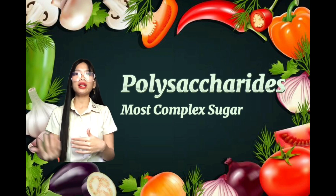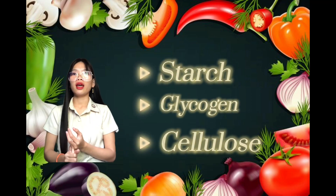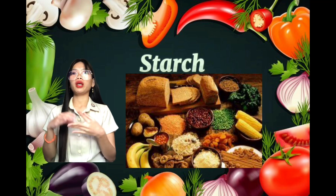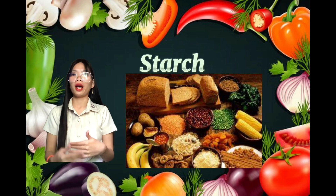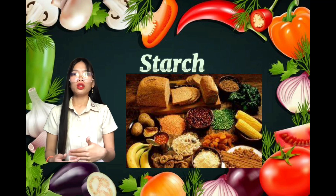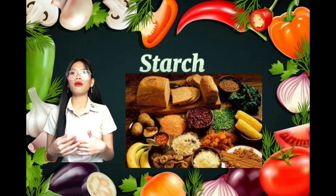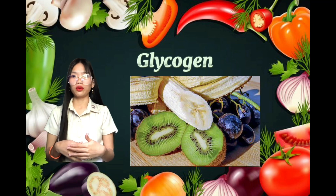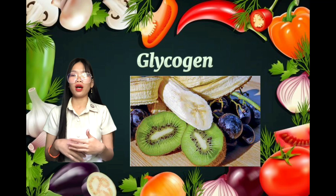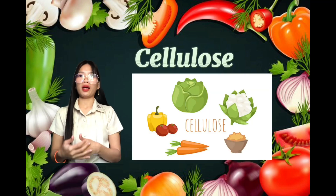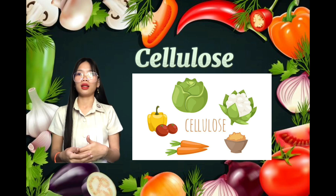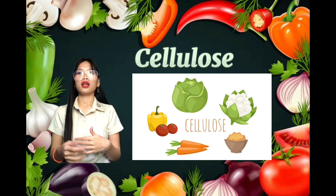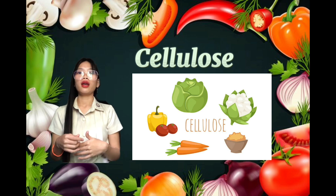Polysaccharides are made of many monosaccharides. The three types of polysaccharides are starch, glycogen, and cellulose. Starch is made of polymers of glucose and is stored in plants — rice, bread, tubers, and pasta are some foods that contain starch. Glycogen is also made of polymers of glucose and is stored in animals, found in the liver and muscle. Cellulose is found in the cell wall of plant cells and functions as structural support, providing protection from the environment.